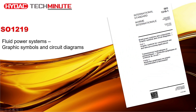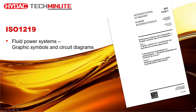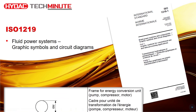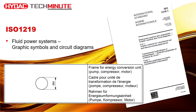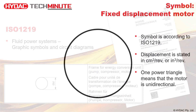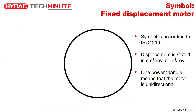ISO 1219 is the international standard for hydraulic symbols and schematics. It describes how a circle is used as an energy conversion unit. In this case, a hydraulic motor is converting hydraulic energy into mechanical energy.